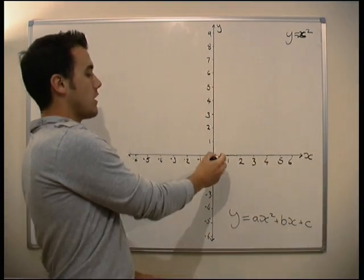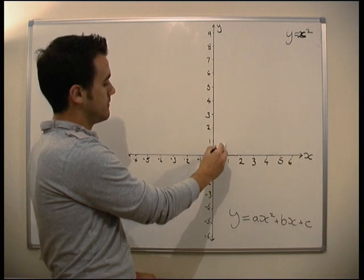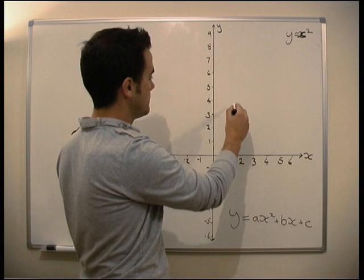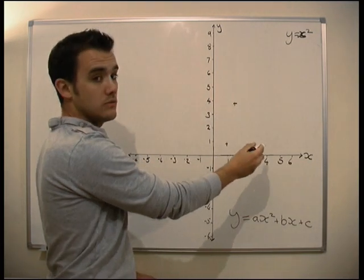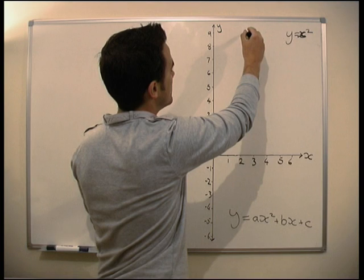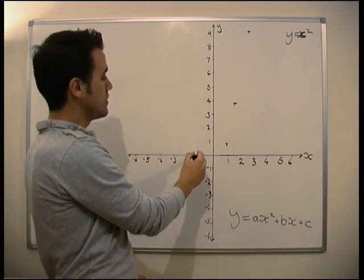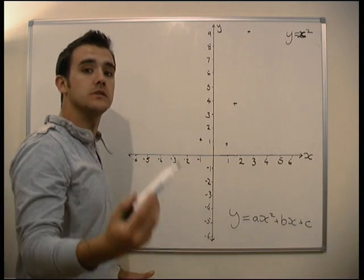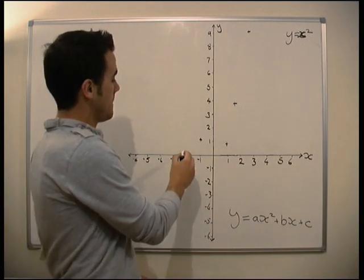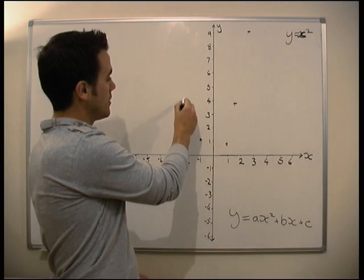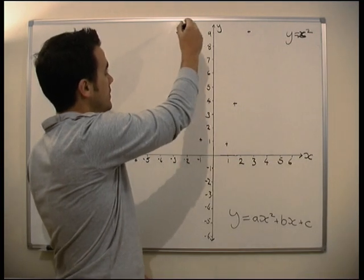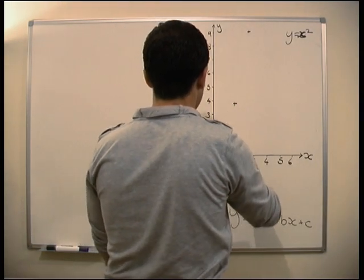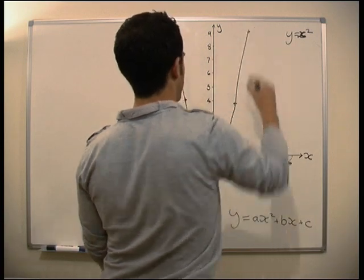Let's plot the points. What would y equal if x equals 1? 1-squared is 1. What about if x equals 2? 2-squared is 4. What about if x equals 3? 3-squared is 9. And the same the other way around: minus 1 squared is going to be 1, because minus 1 times minus 1 is positive. So minus 2 gives plus 4, and minus 3 gives plus 9. So we're going to get a graph that looks something like this.